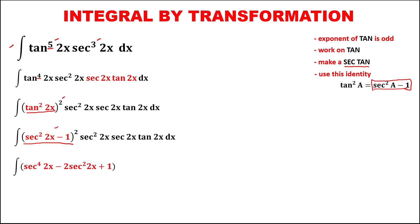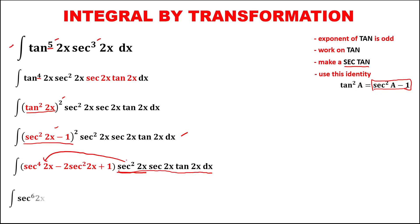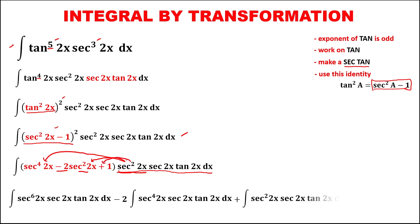Using the FOIL method for expansion, bring down secant squared 2x, then bring down secant squared 2x times secant 2x tangent 2x times dx. Distribute to every term and find the integral for every term. This gives the integral of secant to the power 6, 2x, times secant 2x tangent 2x, minus 2 times the integral of secant to the power 4, 2x, times secant 2x tangent 2x, plus the integral of secant squared 2x times secant 2x tangent 2x dx.